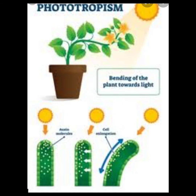Phototropism — positive phototropism is when the shoot grows towards light. The root grows in the opposite direction, away from light. That movement in the opposite direction is called negative phototropism.